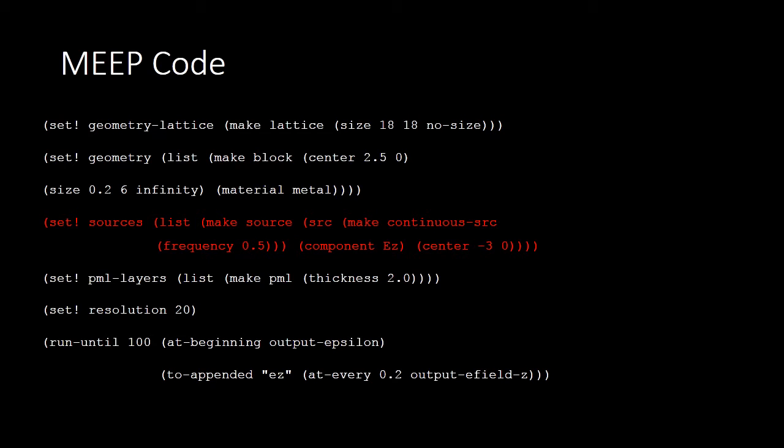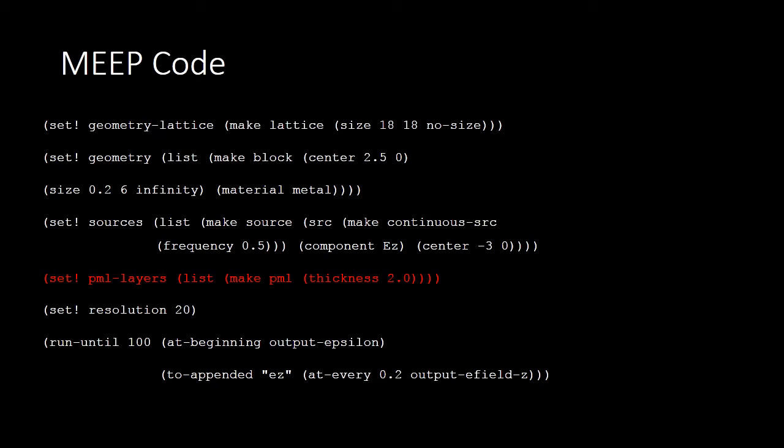Now, we place our point source centered at minus 3, 0 with a fixed frequency of 0.5. Since our space is not infinite, we would like to terminate the wave at the boundary and hence we use perfectly matched layers or PML which absorb the incident wave. After setting the resolution for our simulation, we run the simulation for 100 seconds and output the EZ field component at the gap of 0.2 seconds.